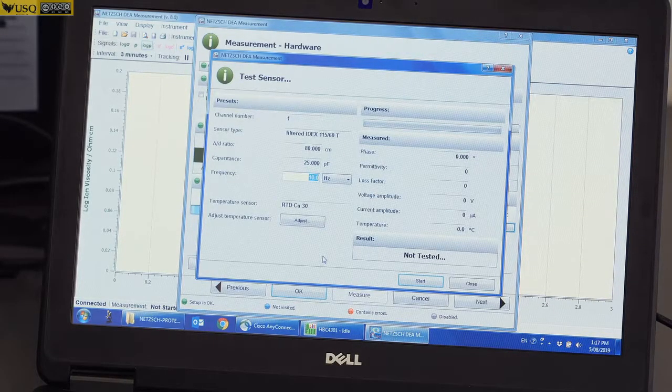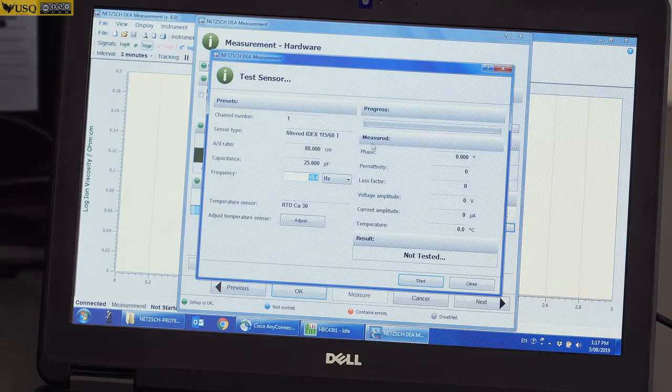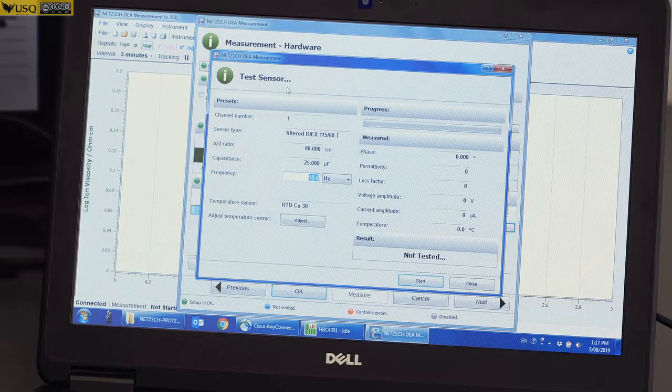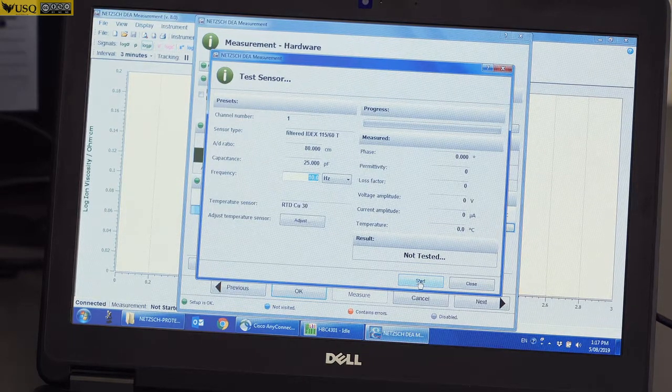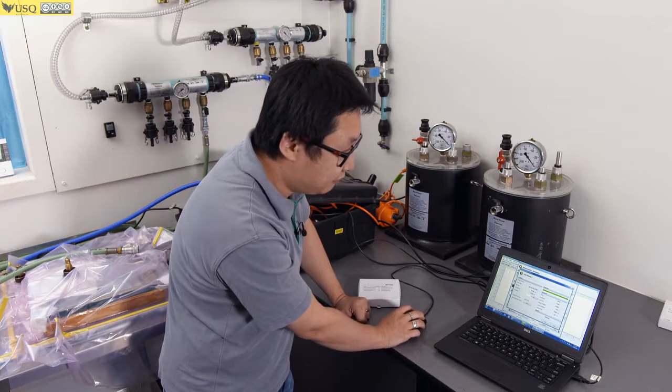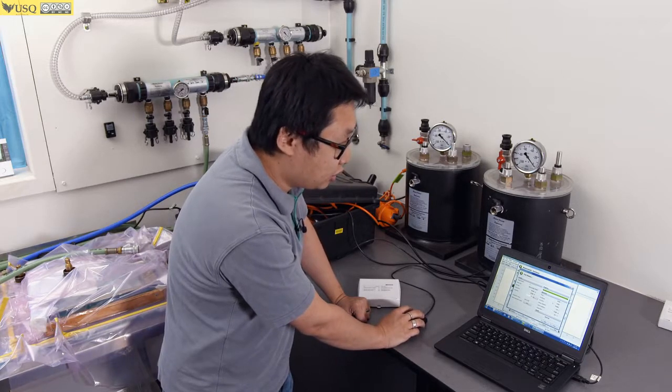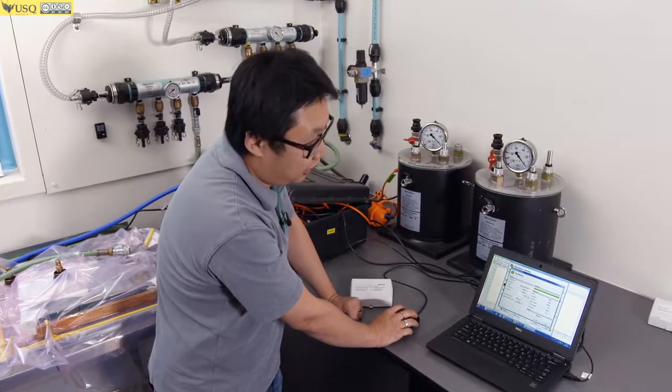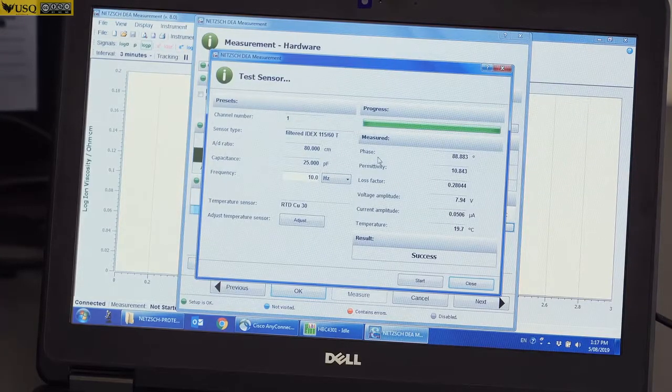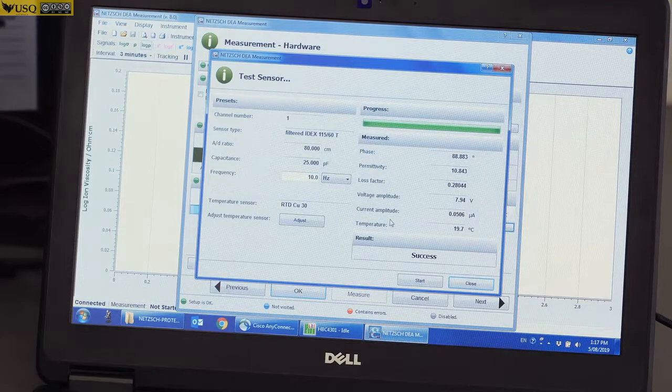From the software, you can see we have the Test Sensor. Now, we have to press Start. When we press the start button, you can see the measured value for all the sensors, including the phase permeability and also the temperature.